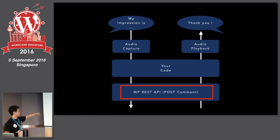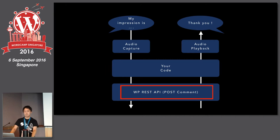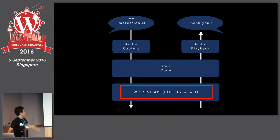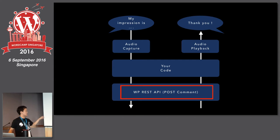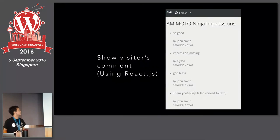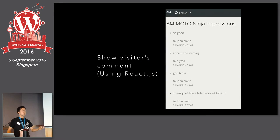So we use WP REST API to post comments. When posting comments succeeds, it calls back with audio playback — Alexa says 'Thank you for coming to this booth.' Of course, these comments can be seen on our website using React.js, showing your name and impression when you speak to Alexa.